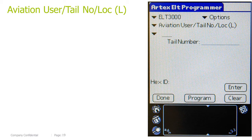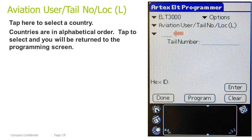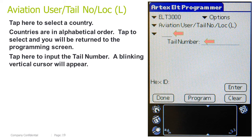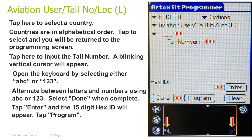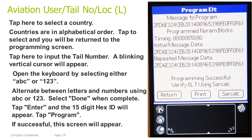Aviation user tail number location log: tap here to select a country — countries are in alphabetical order; tap to select and you will be returned to the programming screen. Tap here to input the tail number; a blinking vertical cursor will appear. Open the keyboard by selecting either ABC or 123. Alternate between letters and numbers using ABC or 123. Select done when complete. Tap Enter and the 15-digit hex ID will appear. Tap Program. If successful, this screen will appear.